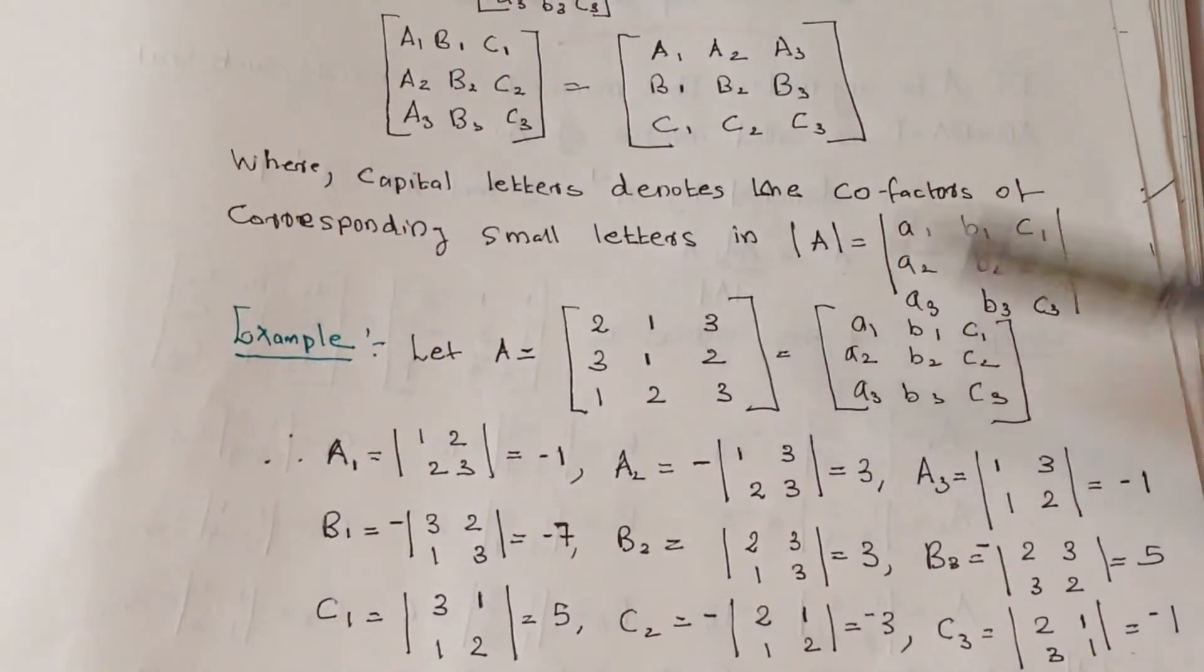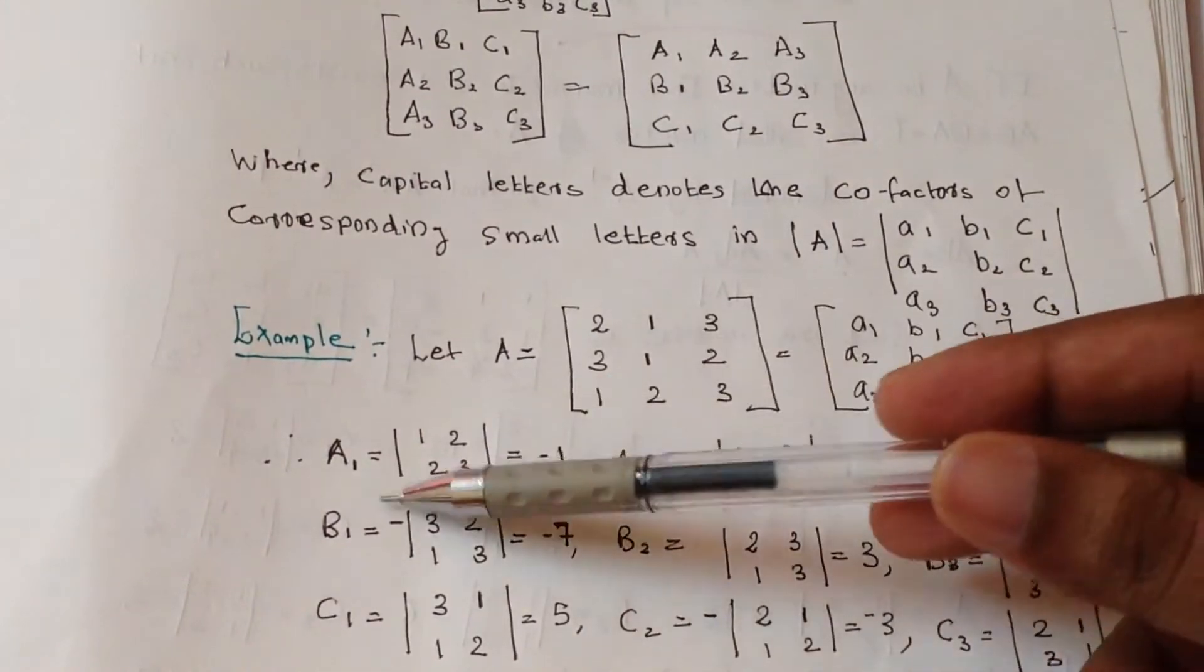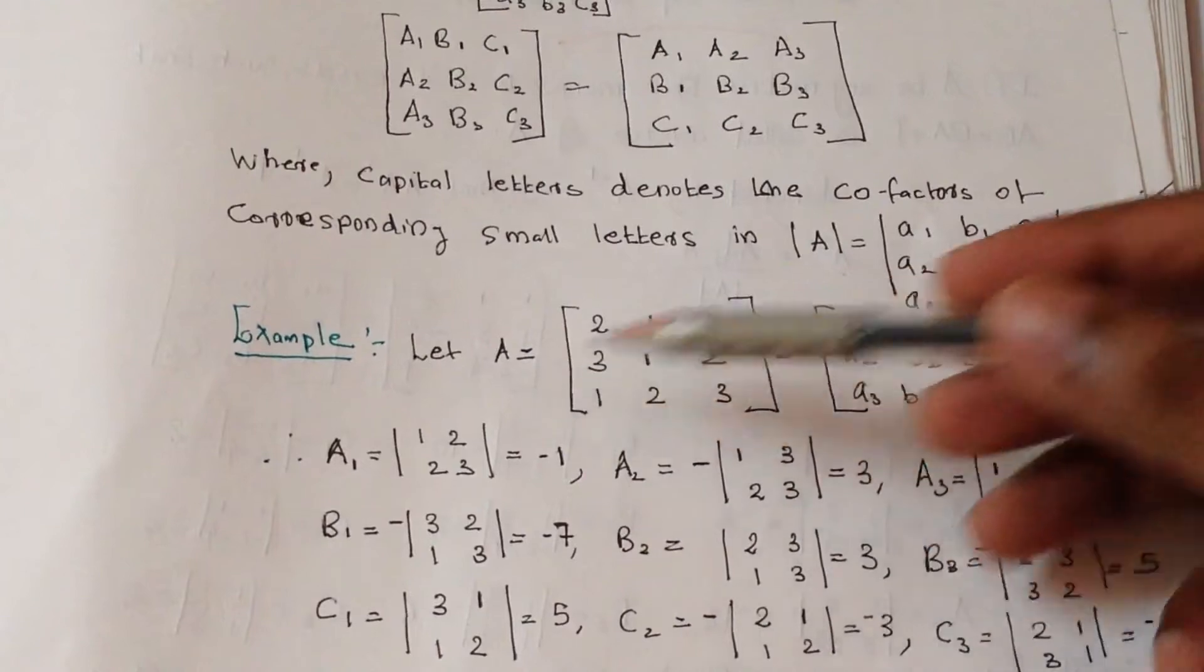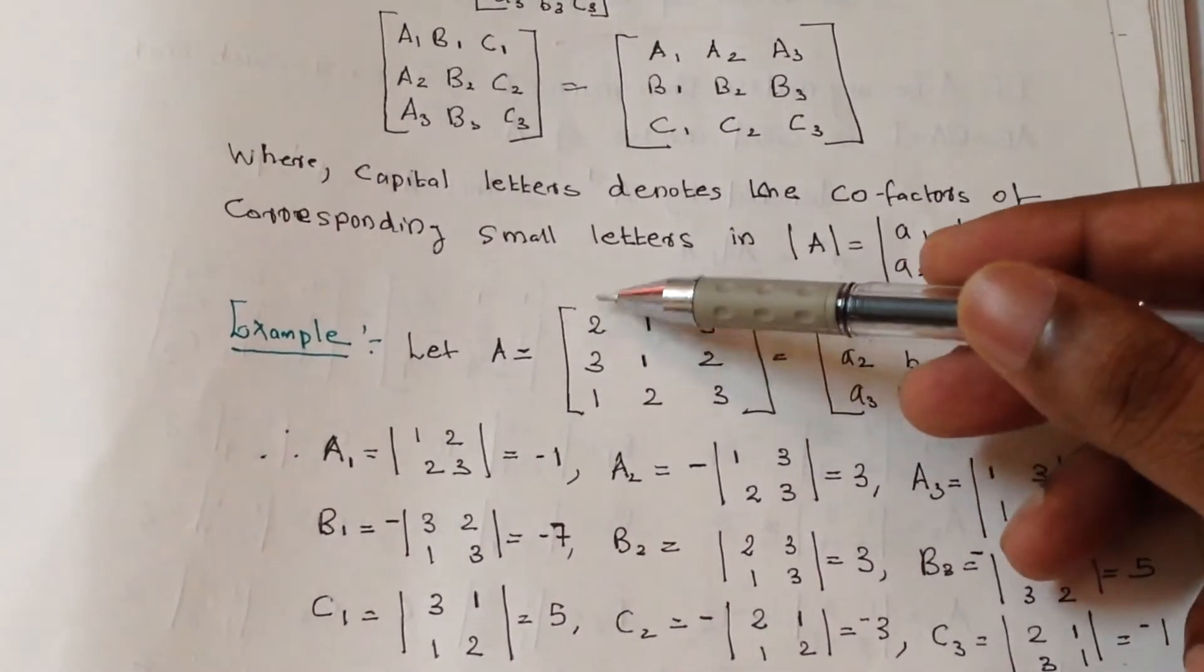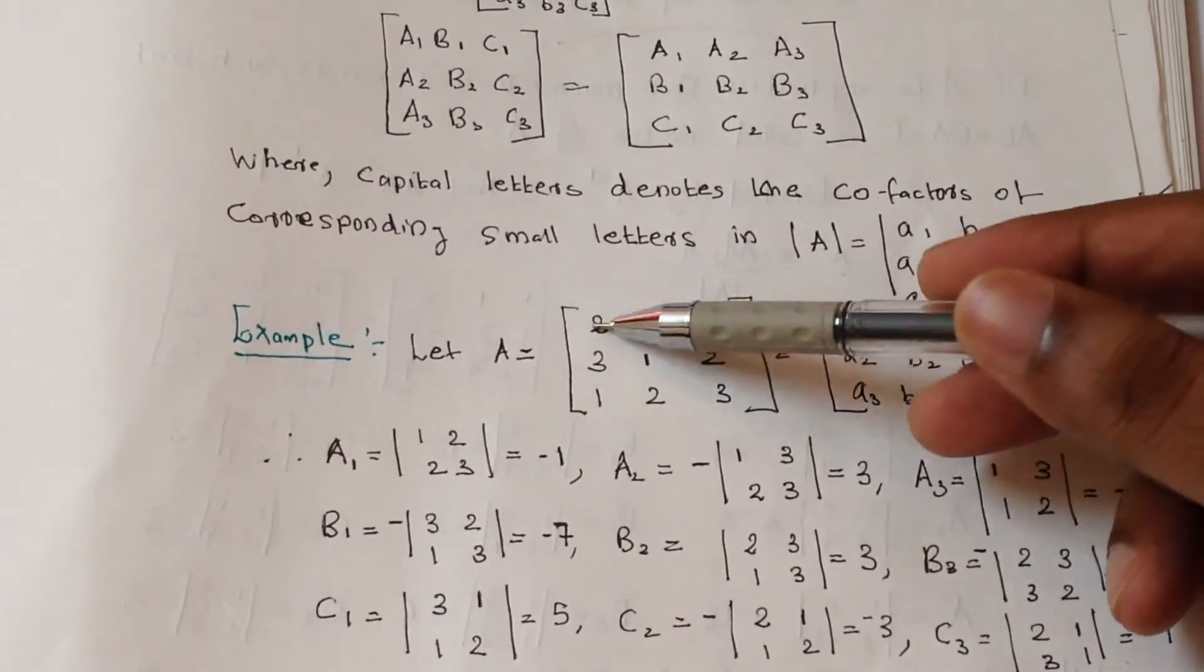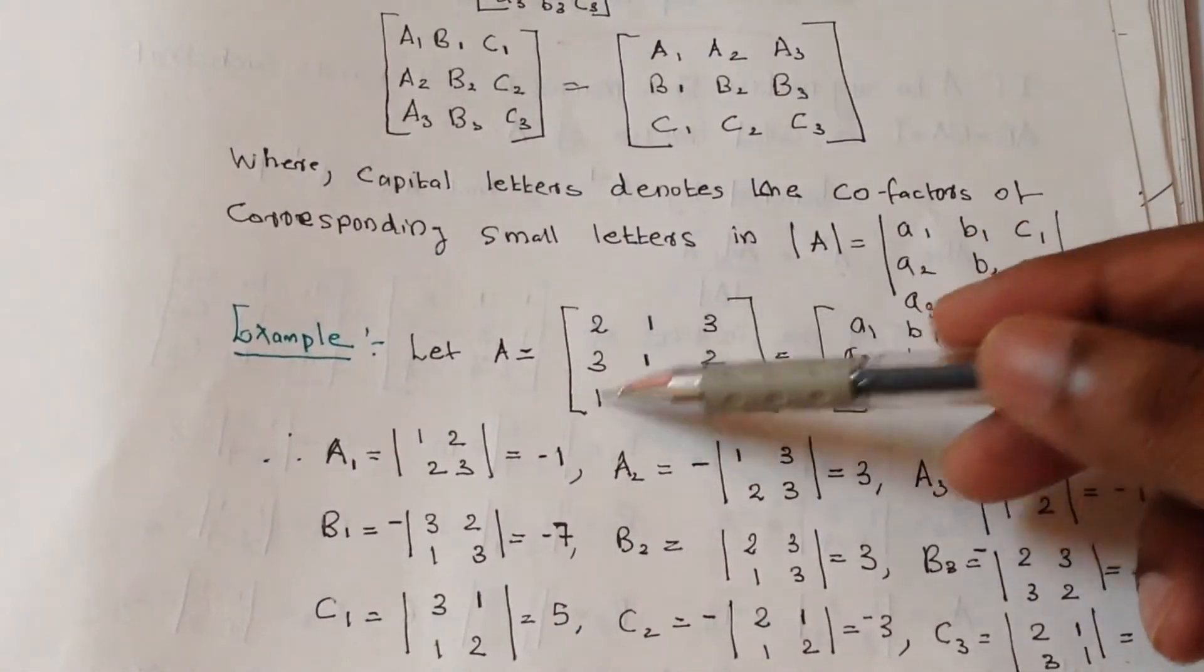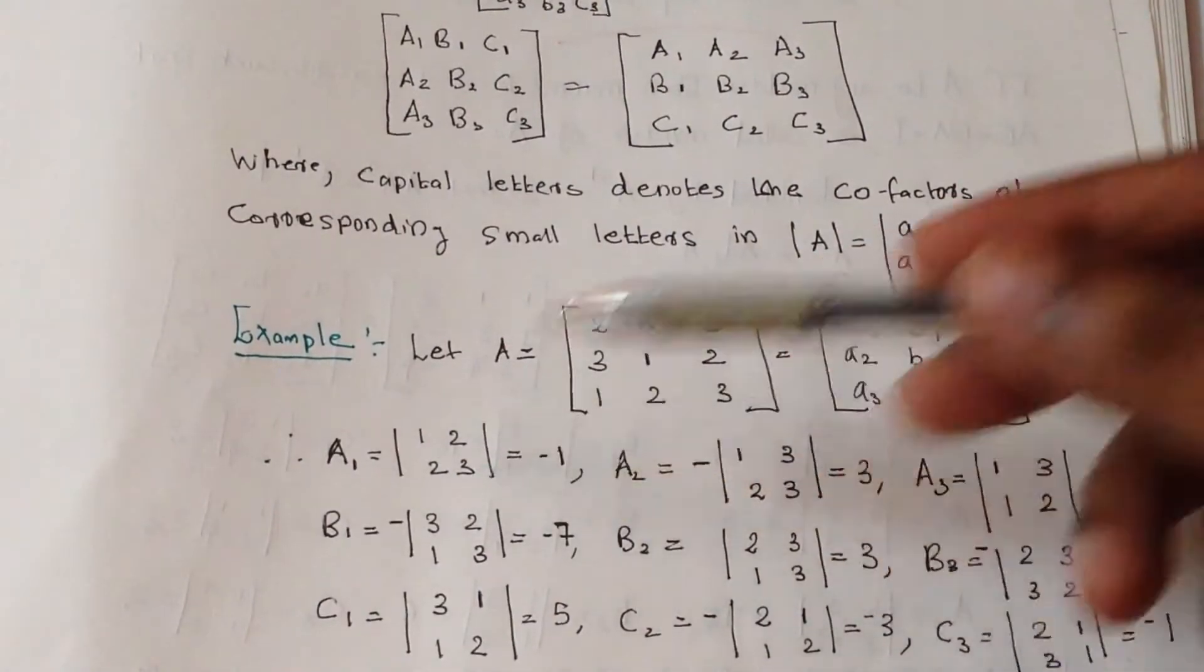What will be the first step? First, we have to find the cofactors of each of these elements. Cofactor of A1, capital A1, will be - we take A1 which is 2. We have to avoid this row and this column, so 1 2, 2 3.